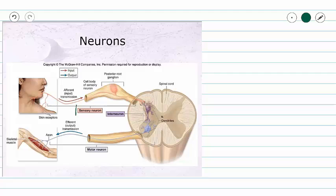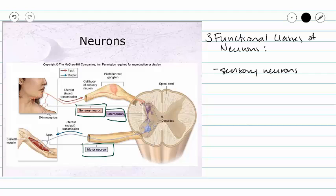In previous videos, we discussed sensory neurons and motor neurons, but we're also going to throw in interneurons. So our three functional classes of neurons are sensory neurons, interneurons, and motor neurons.